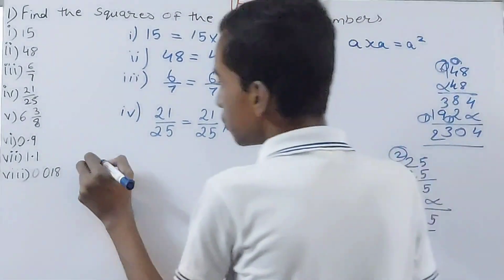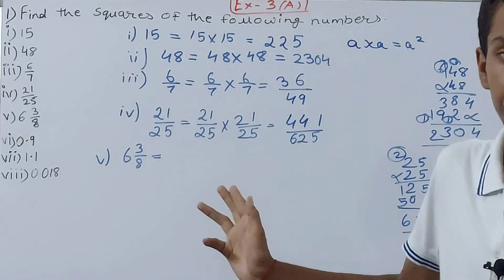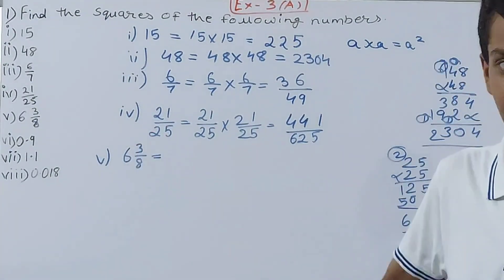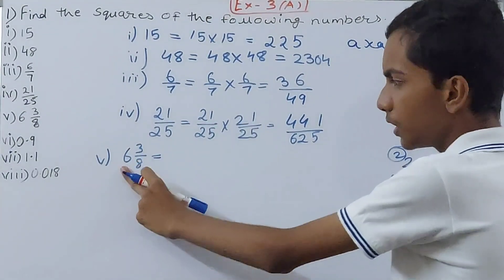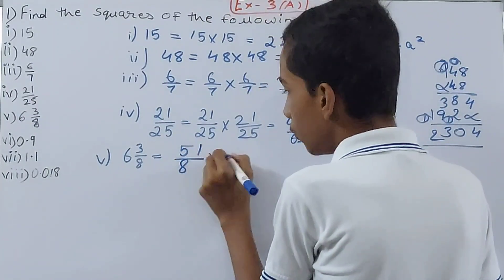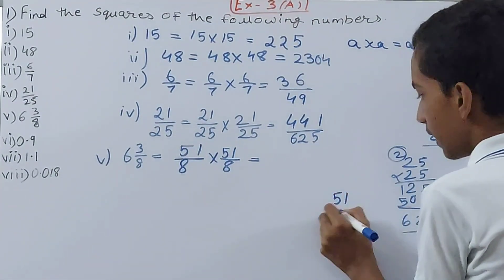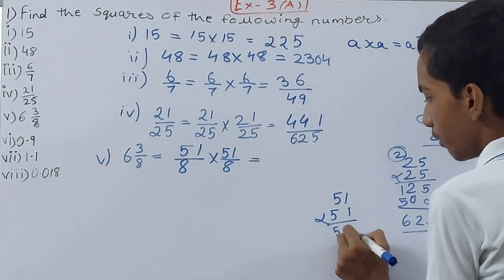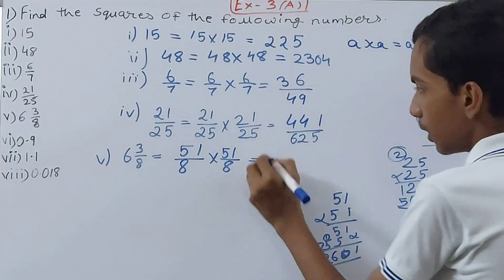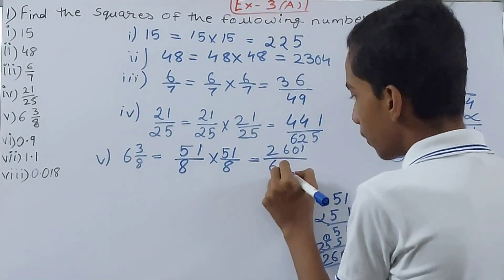Another one: fifth part, 6 whole 3/8. Here we will convert mixed fractions into improper fractions - we cannot proceed with mixed fractions directly. We will make it as an improper fraction: 8 into 6 is 48 plus 3, so 51 upon 8 into 51 upon 8. Again multiplication: 51 times 51 is 2601 upon 8 into 8, which is 64. So 2601 upon 64.